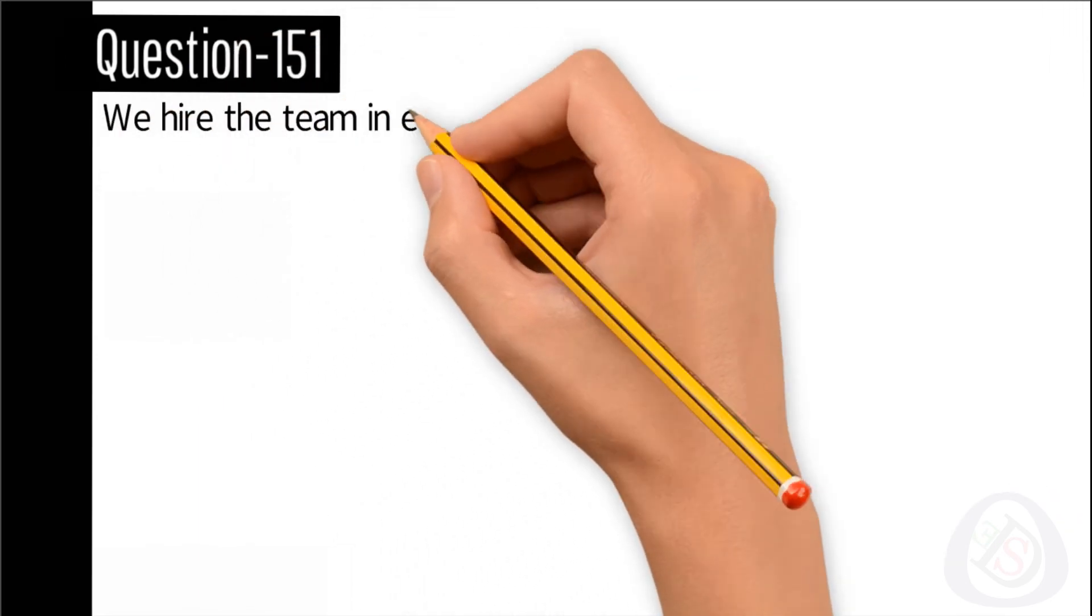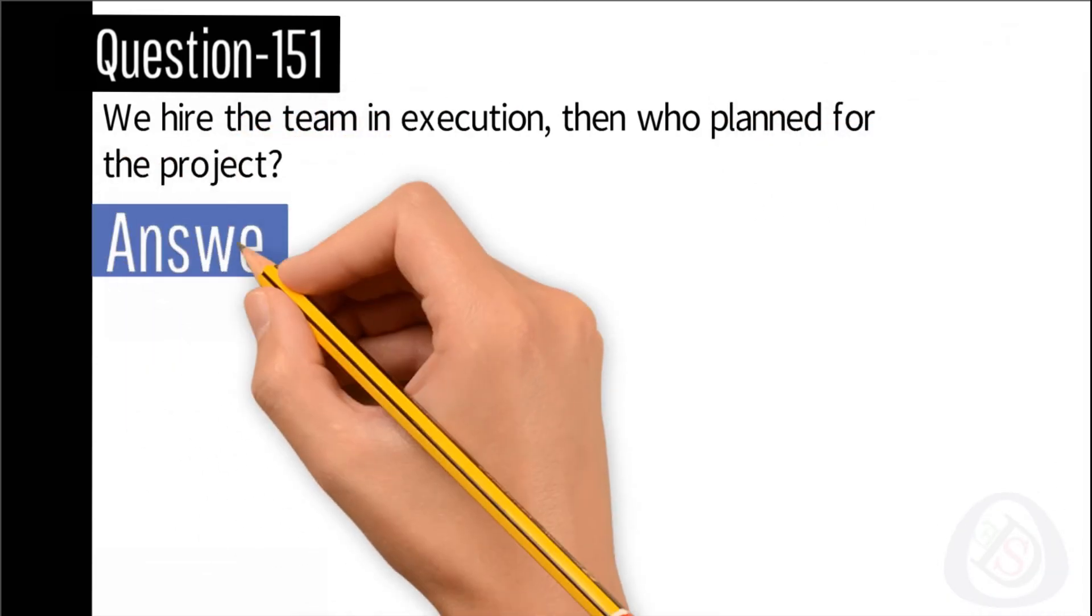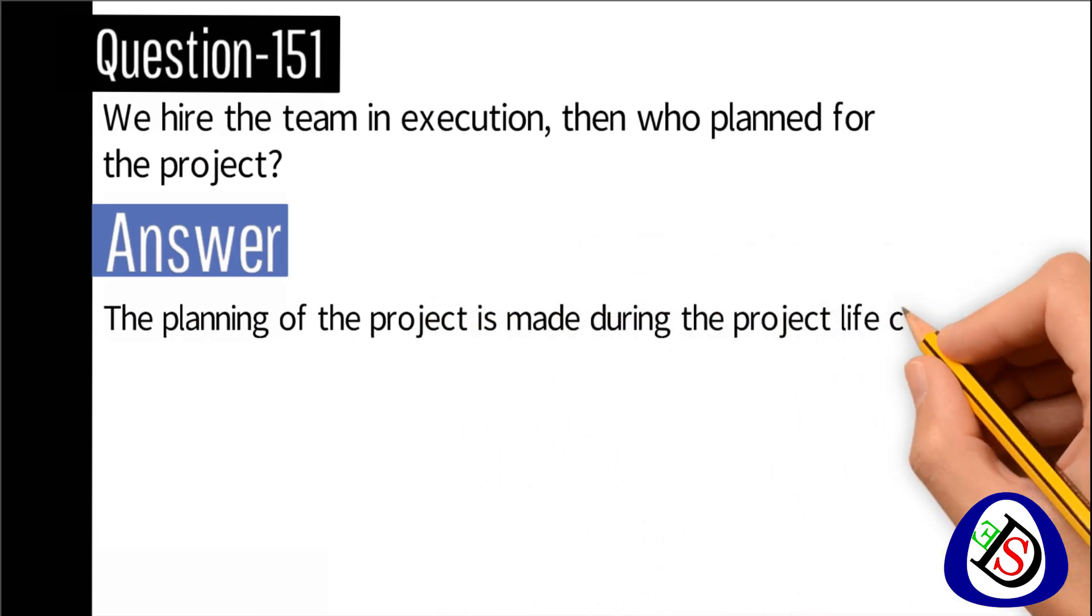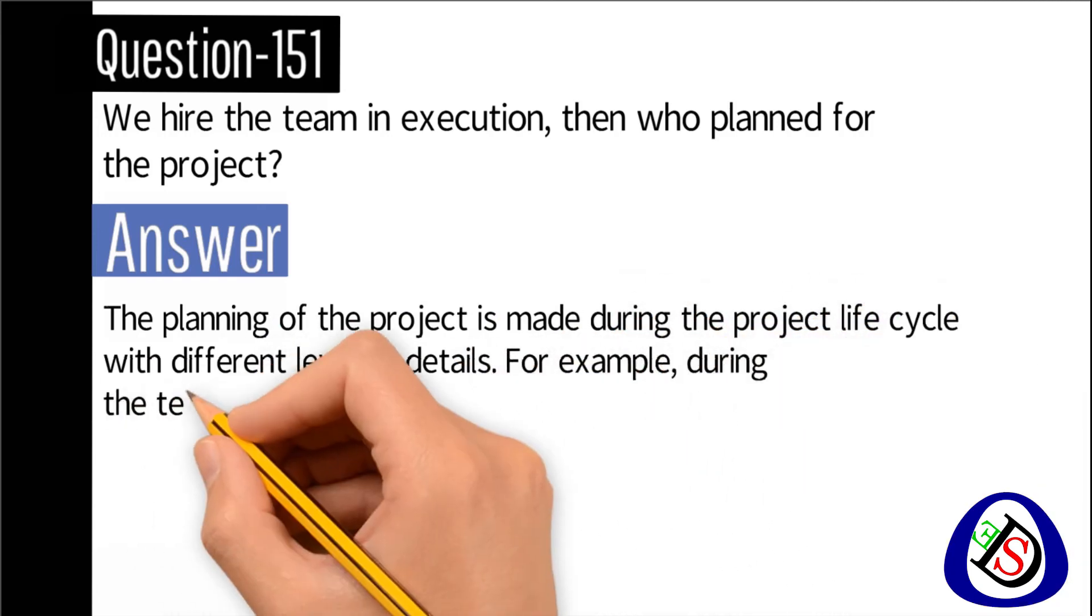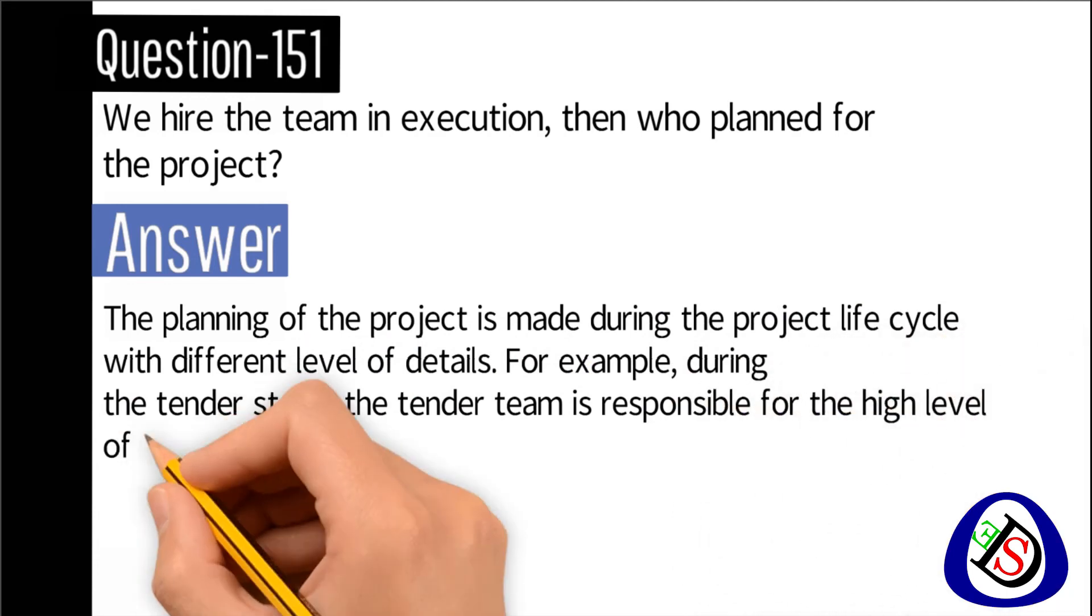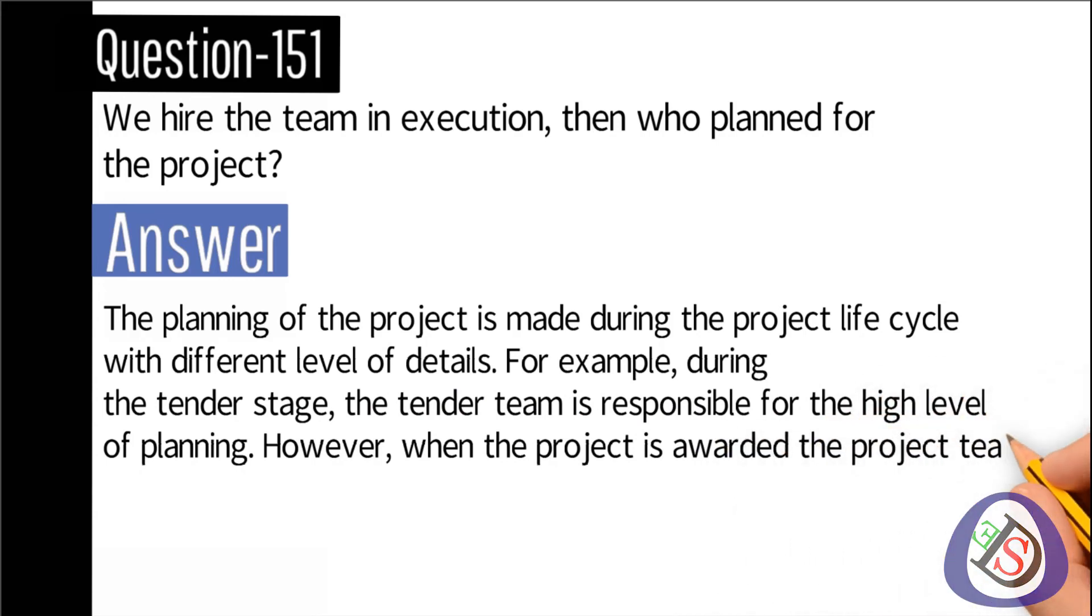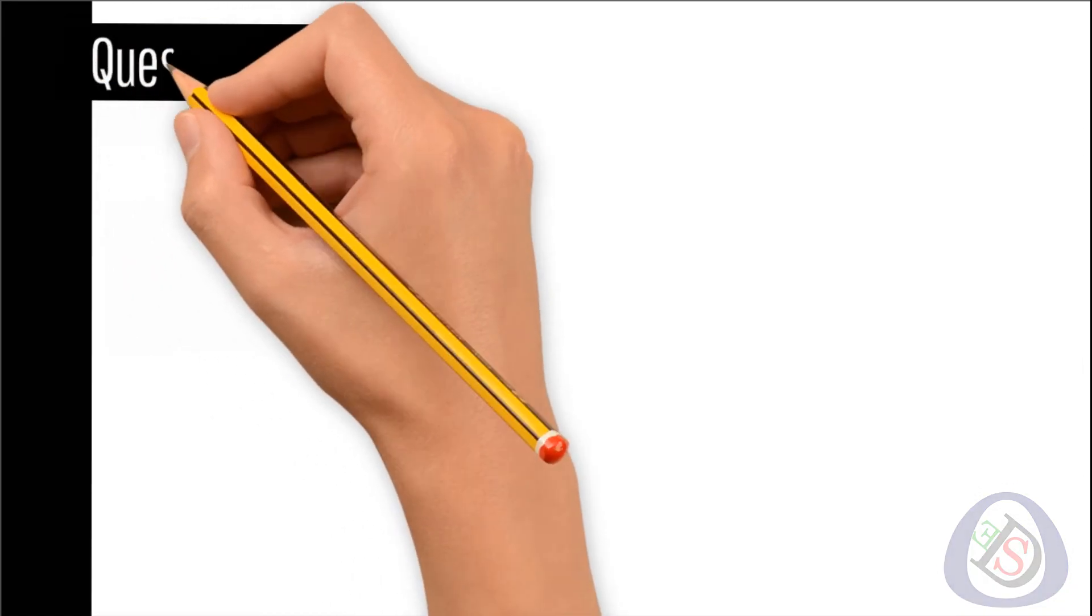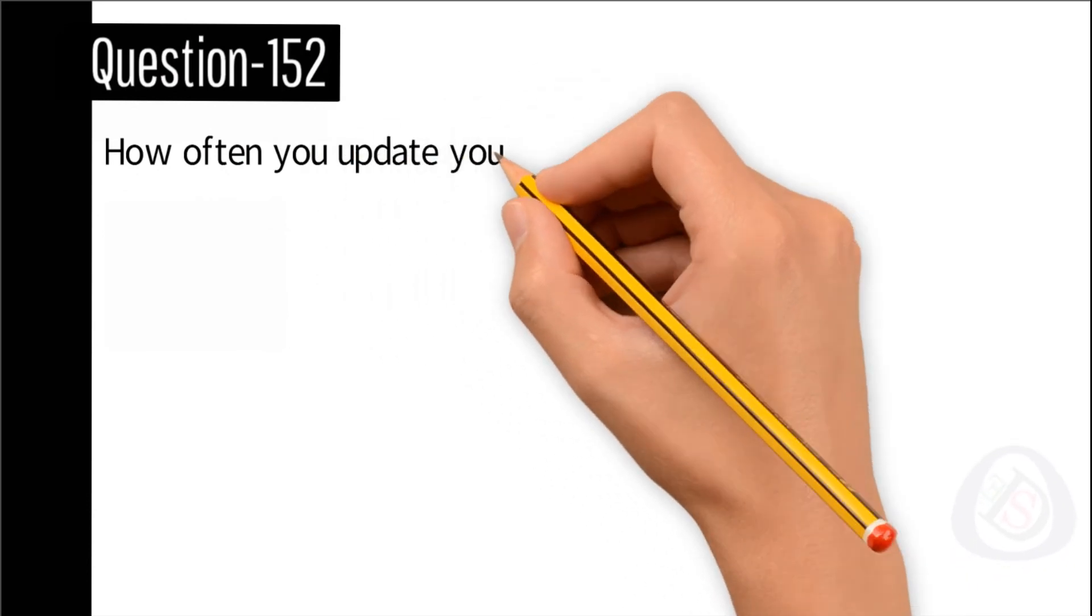Question number 151: We hire the team in execution, then who planned for the project? Answer: The planning of the project is made during the project life cycle with different levels of details. For example, during the tender stage the tender team is responsible for the high level of planning. However, when the project is awarded, the project team is responsible for the planning and breakdown.